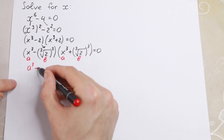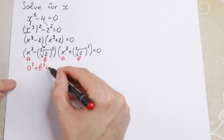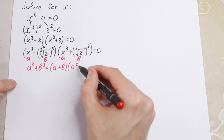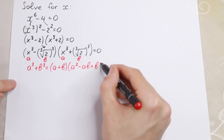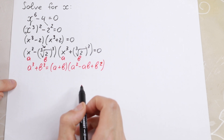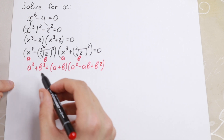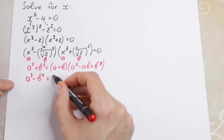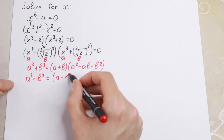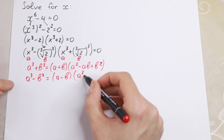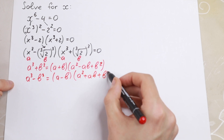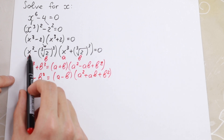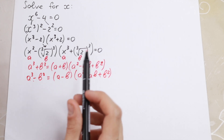So we will have a cubed plus b cubed equals a plus b, times a squared minus ab plus b squared. That is the first rule. And a cubed minus b cubed equals a minus b, times a squared plus ab plus b squared. So we write both rules: the sum of cubes and the difference of cubes.